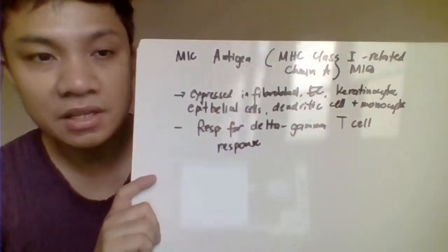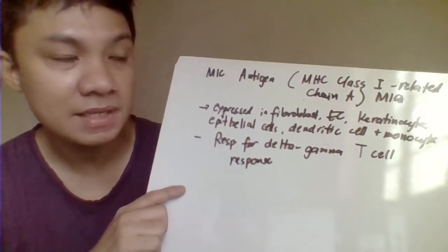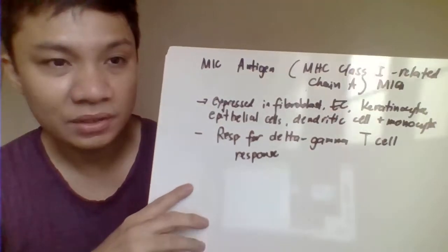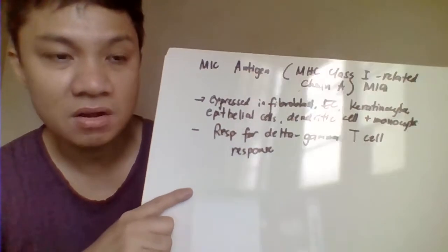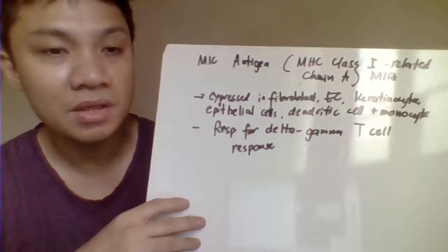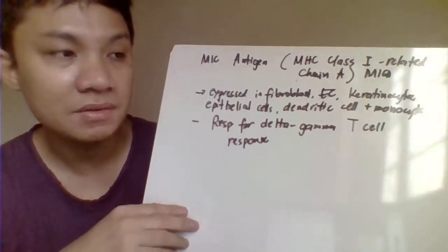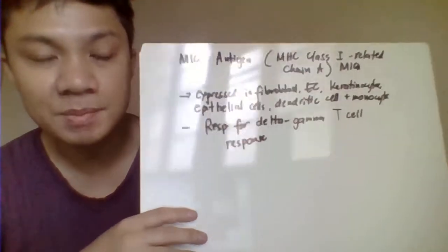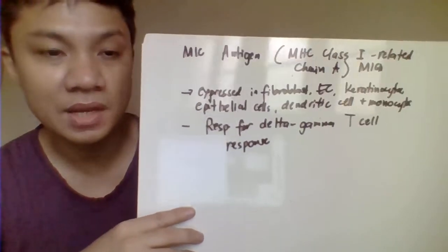Another consideration for successful transplantation is MICA, the MHC class 1-related chain A protein. This MICA antigen is expressed on fibroblasts, endothelial cells, keratinocytes, epithelial cells, dendritic cells, and monocytes — but not on T lymphocytes or B lymphocytes. MICA is responsible for the delta-gamma T-cell rejection process.